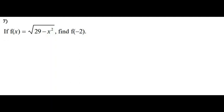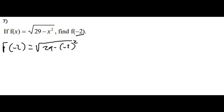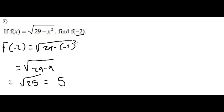If f(x) equals the square root of (29 minus x²), find f(negative 2). Step 1: replace all x's with negative 2. So f(negative 2) equals the square root of (29 minus (negative 2)²). The negatives cancel and 2 squared equals 4, so we get the square root of (29 minus 4) equals the square root of 25, which equals 5. Our final answer is 5.